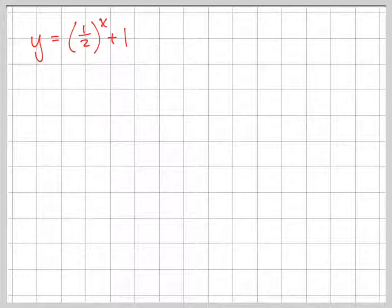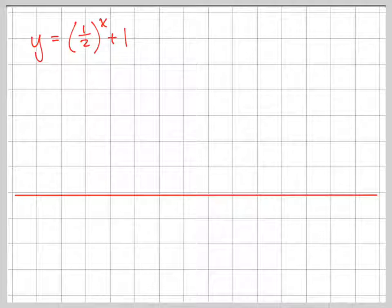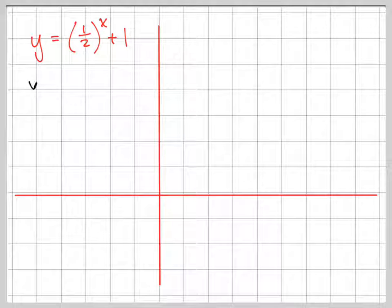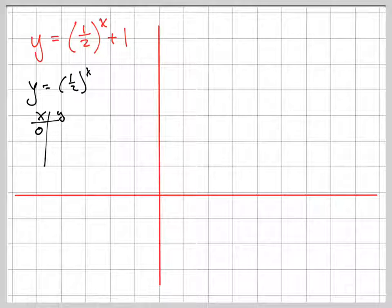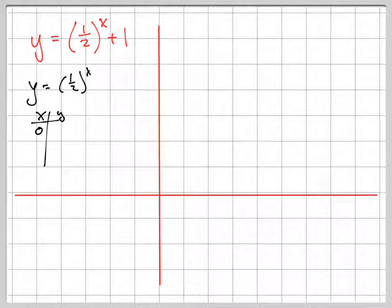To graph this exponential function, you have to think of the basic exponential function. The basic function would be y equals one-half to the x. Remember what that does: if you make a t-chart and plug in zero for x, anything raised to the zero power is one. So the point zero comma one is always on your basic exponential graph.